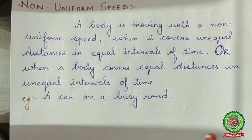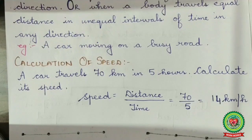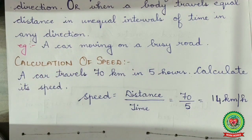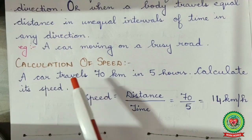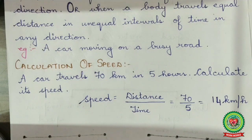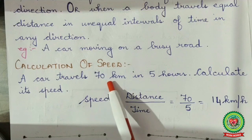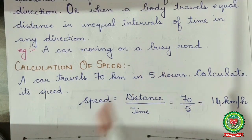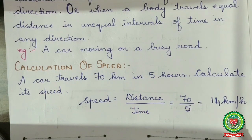An example of non-uniform speed is a car on a busy road. Now for the calculation of speed, consider a numerical problem: a car travels 70 km in 5 hours. Using the formula speed equals distance over time, speed equals 70 divided by 5, which gives 14 km per hour.